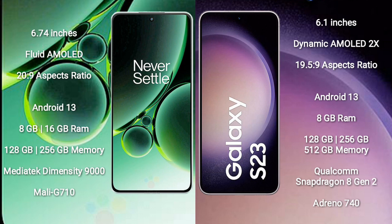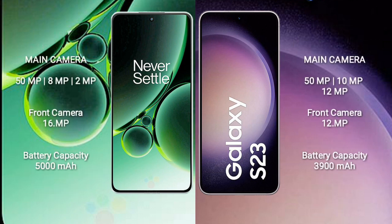OnePlus Nord 3 features a MediaTek Dimensity 9000 processor and Mali-G710 GPU. Samsung Galaxy S23 comes with 8GB RAM and 128GB, 256GB, or 512GB internal storage, with a Qualcomm Snapdragon 8 Gen 2 processor and Adreno 740 GPU.